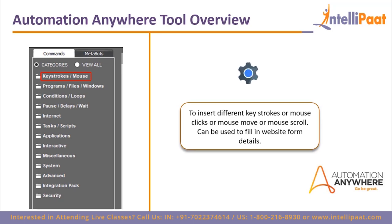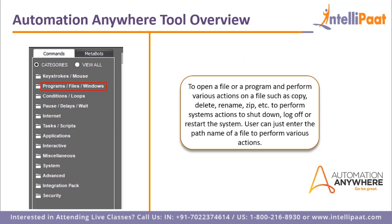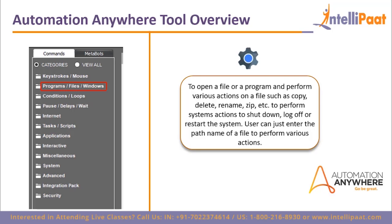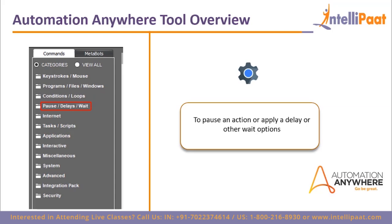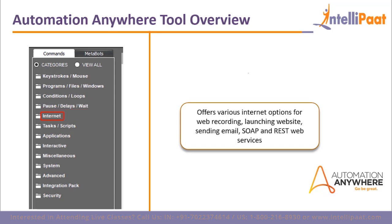Keystrokes mouse — this is used to insert different keystrokes, mouse clicks, mouse moves, or mouse scrolls, and can be used to fill in website form details. Program files windows — to open a file or program and perform actions such as copy, delete, and more, including system actions like shut down, lock, or restart. The user enters the path name of the file to perform these actions. Conditions loops — to perform if, else, else-if, and end-if commands, as well as loop commands like start loop, end loop, exit, and continue. Pause, delays, and wait — to pause an action, apply a delay, or use wait options. Internet — offers many internet options such as web recording, launching a website, sending email, SOAP, and REST web services.